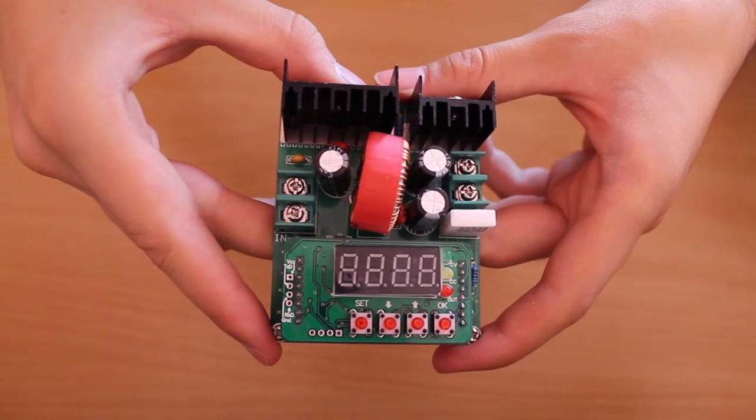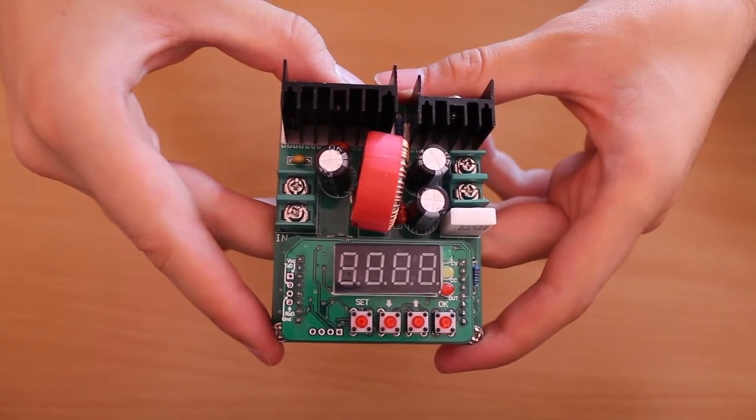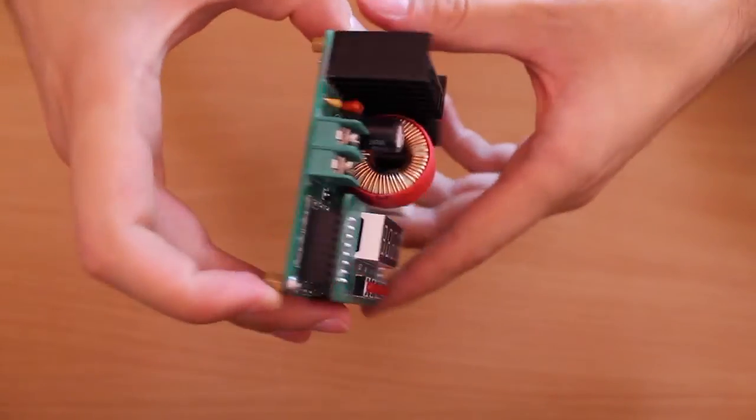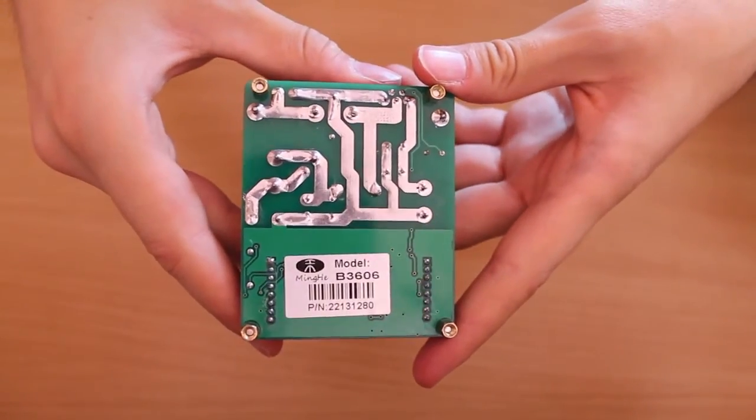This is a DC to DC buck converter I got from banggood.com, there's a link in the description. It's model B3606, made by Ming He.